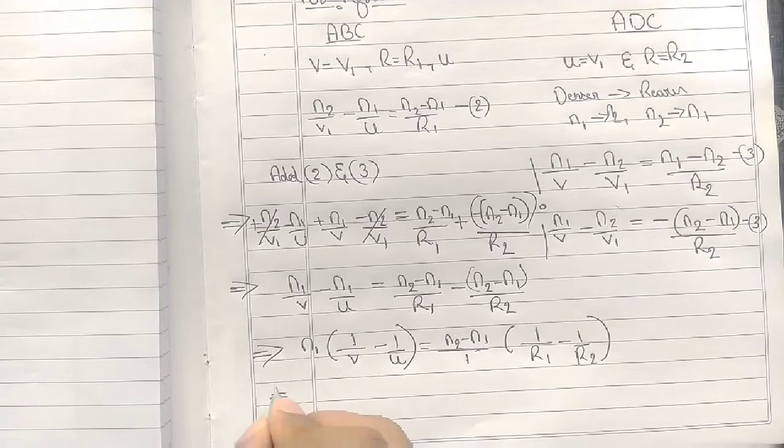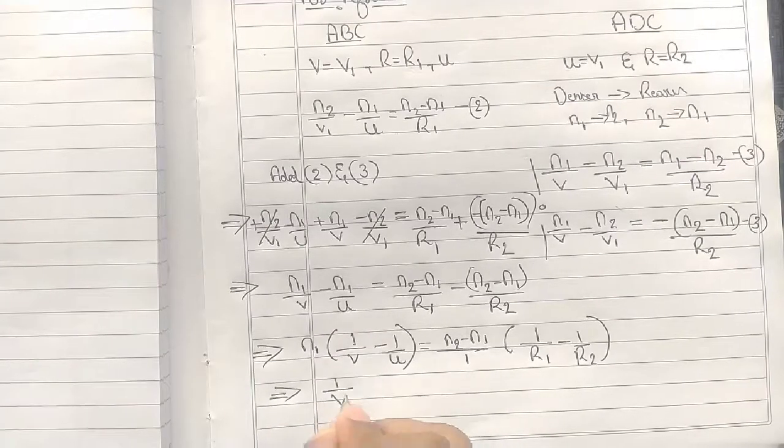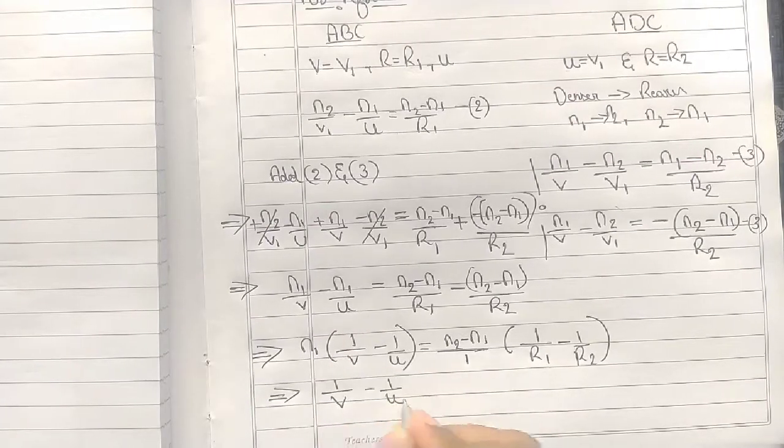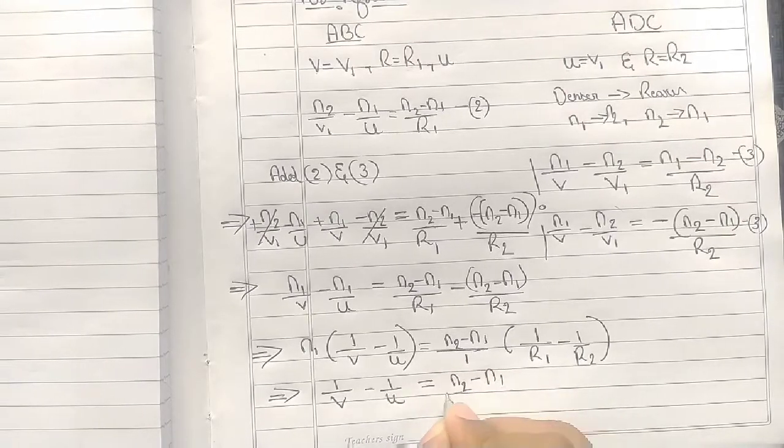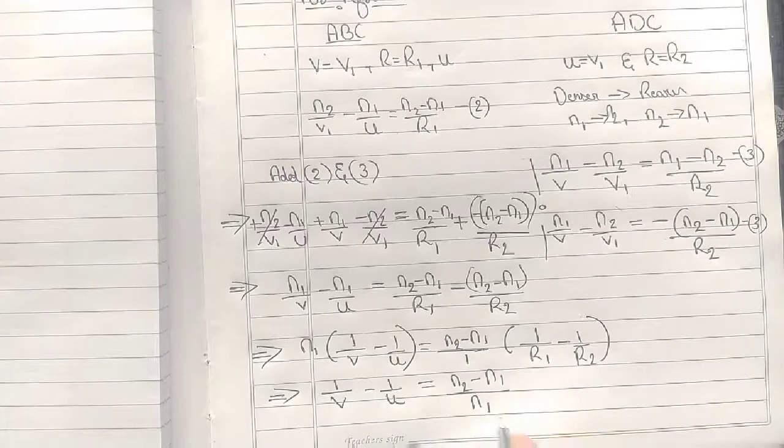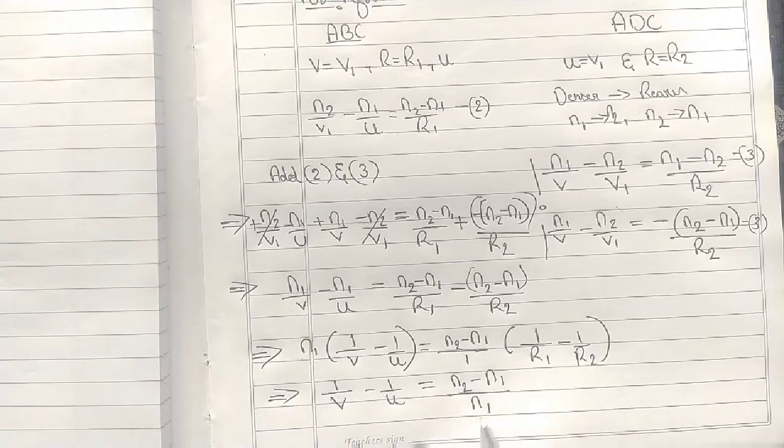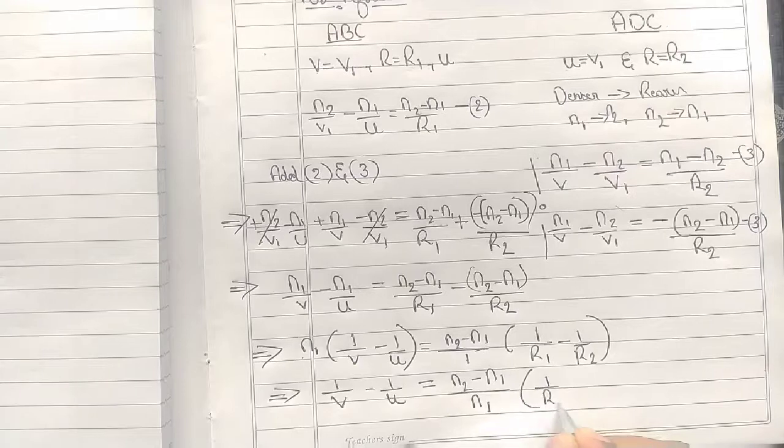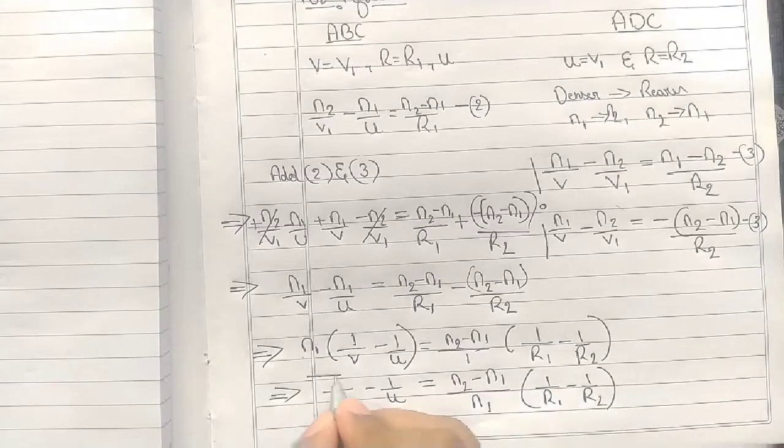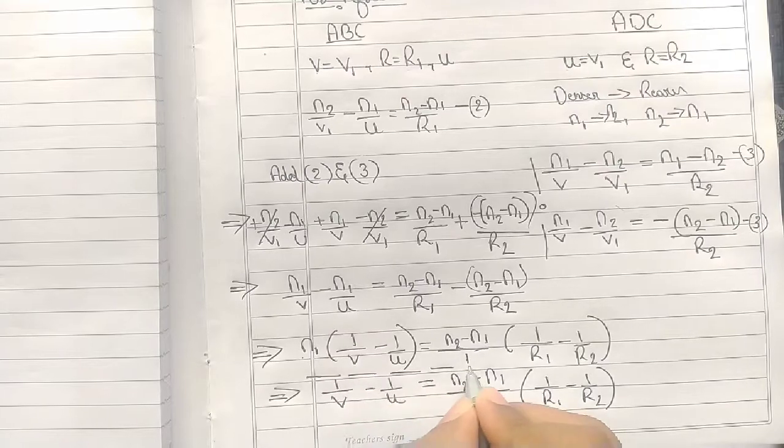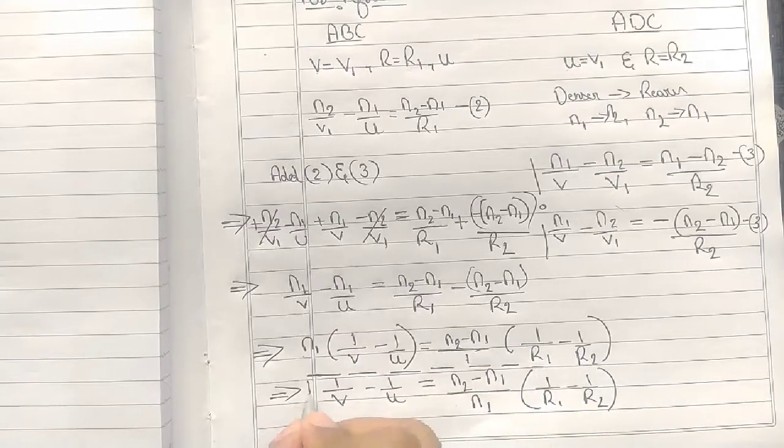Now in the last step, 1 by V minus 1 by U equals N2 minus N1 divided by N1, I brought N1 to the opposite side, times 1 by R1 minus 1 by R2. We got our Lens Maker's Formula. I did it in one page.